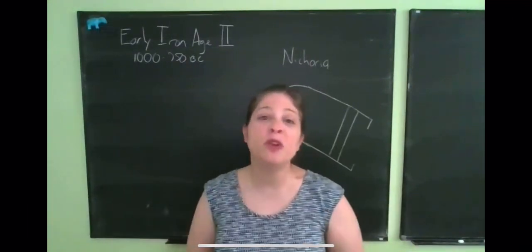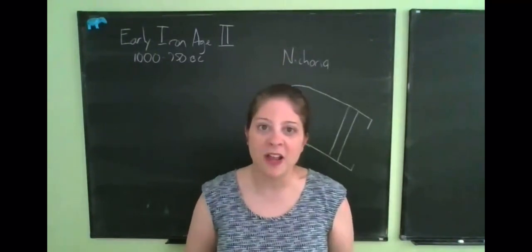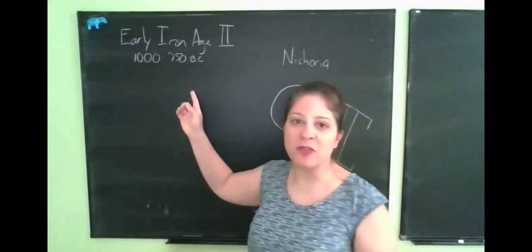Hello! Okay, so in this video we're going to start our discussion of the next phase of the Early Iron Age, and that is Early Iron Age II, which lasts from about 1000 to 750 BC.